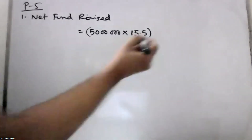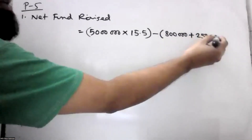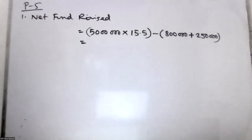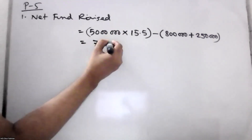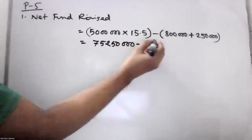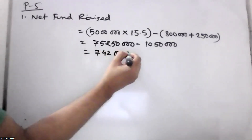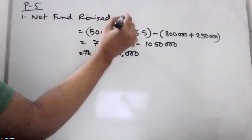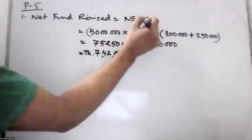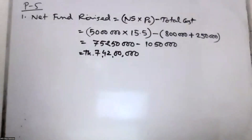It's like direct costs and indirect costs. To make the claim: number of shares multiplied by share price, minus total cost.